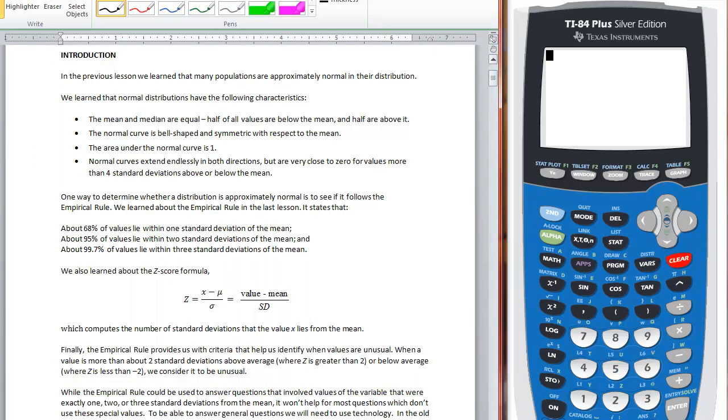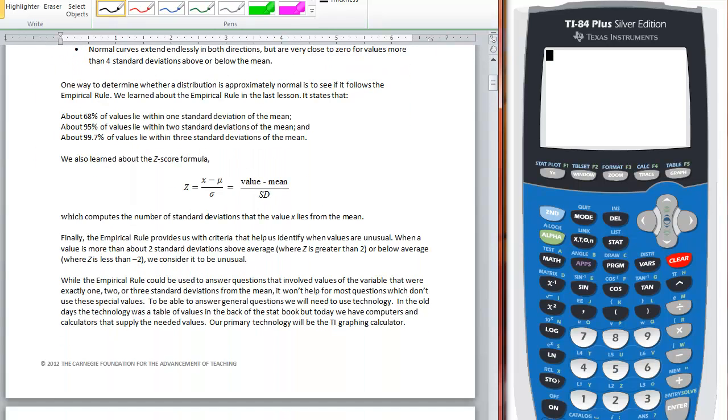Now we talked about most of these things but now we've got this formula. Don't forget we have this beautiful thing right here that we want to keep track of. Super duper important: the z-score formula is the value minus the mean divided entirely by the standard deviation. This value computes the number of standard deviations that the value x lies from the mean, and so that makes it super duper important.